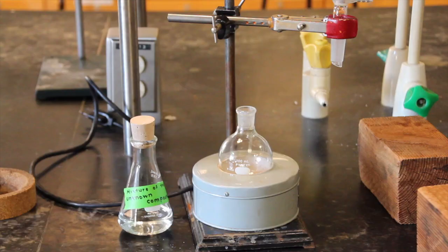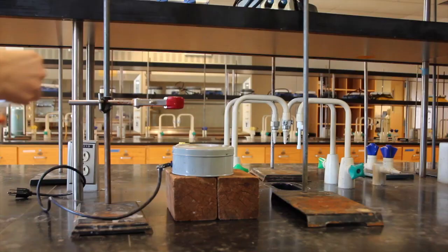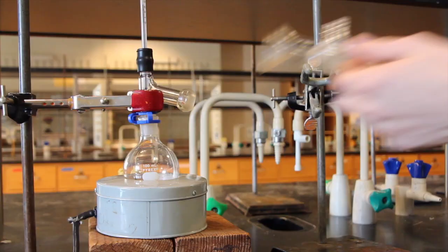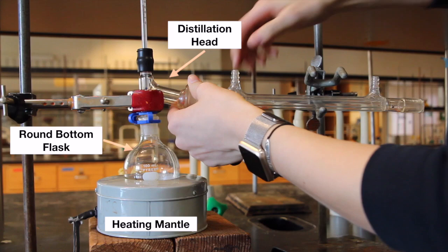You will work in groups of three or four with you and your partners working on the same unknown mixture. Each member of the group will perform a separate distillation. At least two members should set up and perform a fractional distillation, others can perform simple distillations. The major difference between the two types of distillations is the setup and glassware involved. Other differences arise from the effect that the different setups have on the quality of separation.